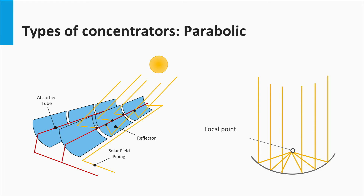The first system we will discuss is the parabolic trough. A parabolic trough consists of a linear parabolic reflector that concentrates the light onto an absorber tube located in the middle of the parabolic mirror, in which the working fluid is located. The fluid is heated to 150 to 350 degrees Celsius, and then used in a heat engine. The most known examples are the Nevada Solar One and the Plataforma Solar de Almeria.